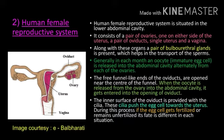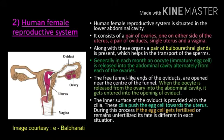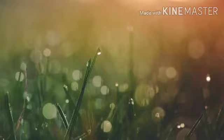In this course, the egg cell may get fertilized or may remain unfertilized. When the egg cell gets entry into the uterus, if it is fertilized it gets implanted within the uterus; or if it is not fertilized, then it comes out of the uterus through the vagina.